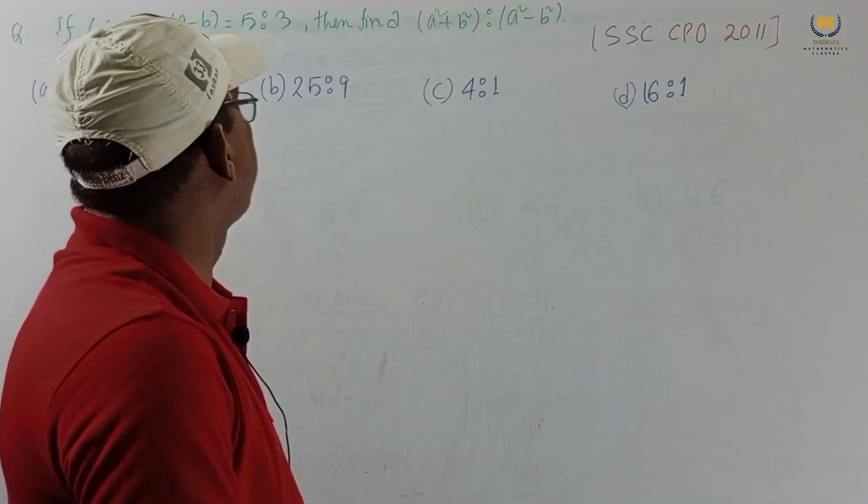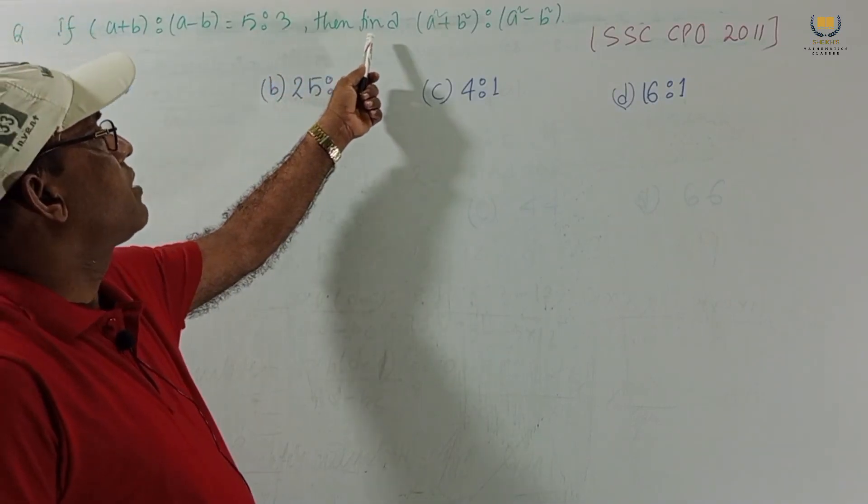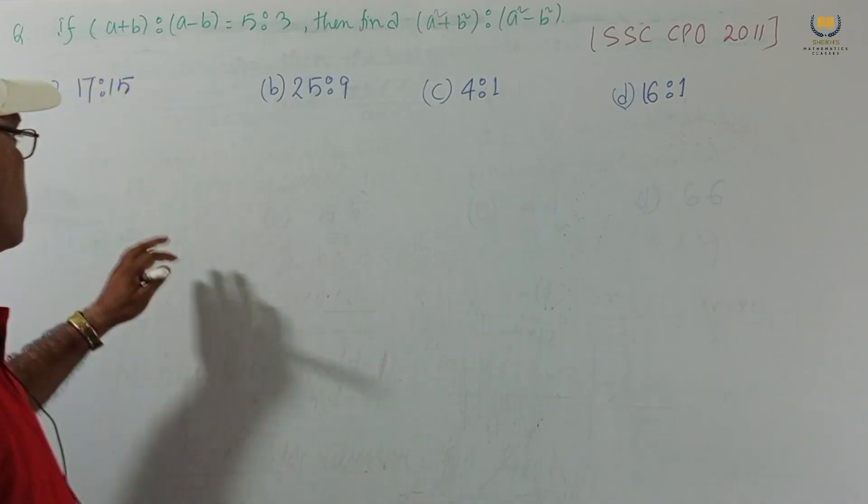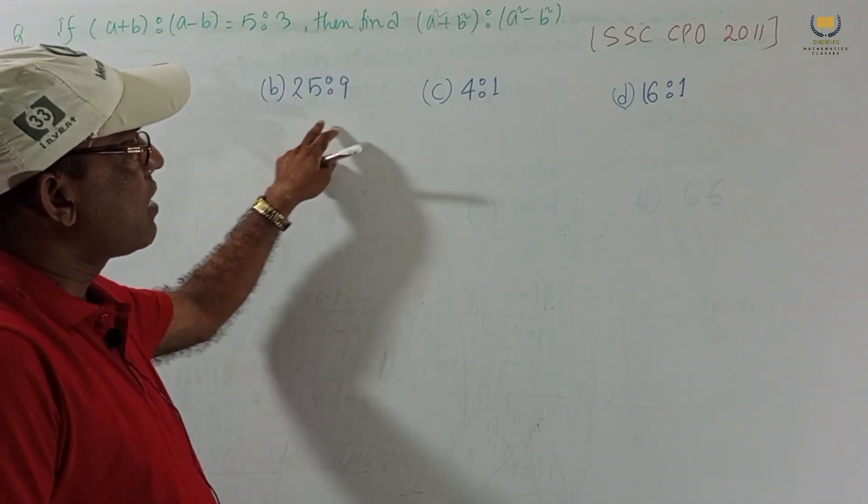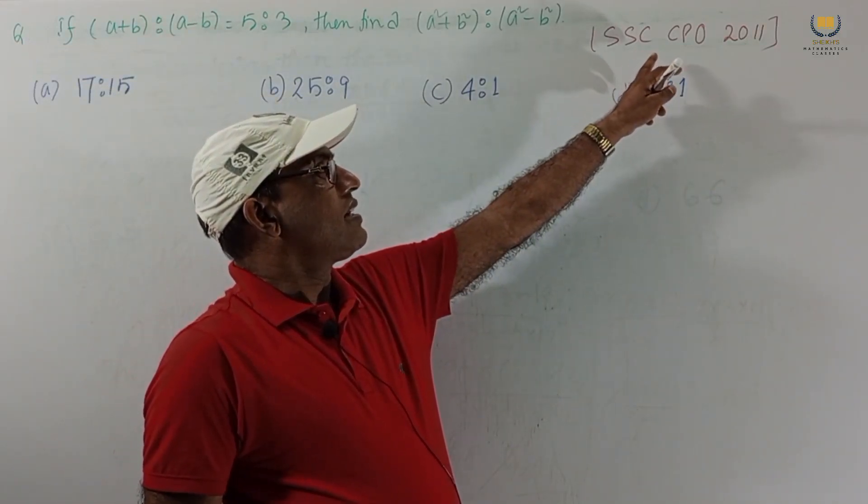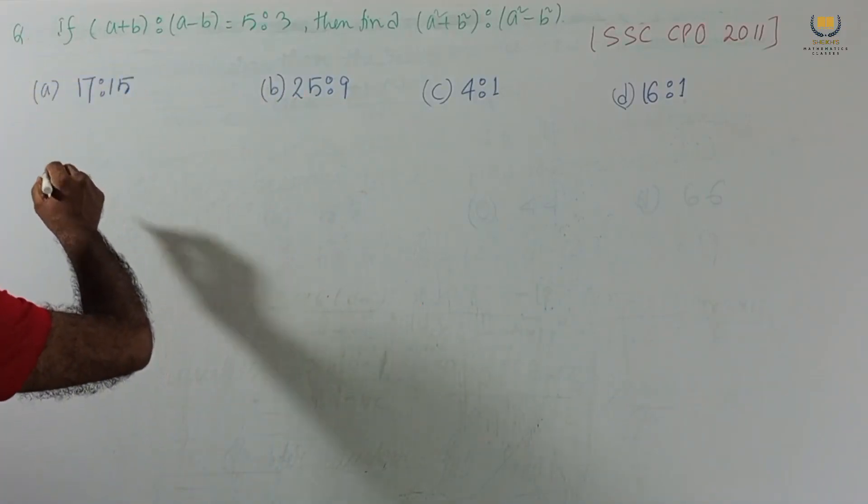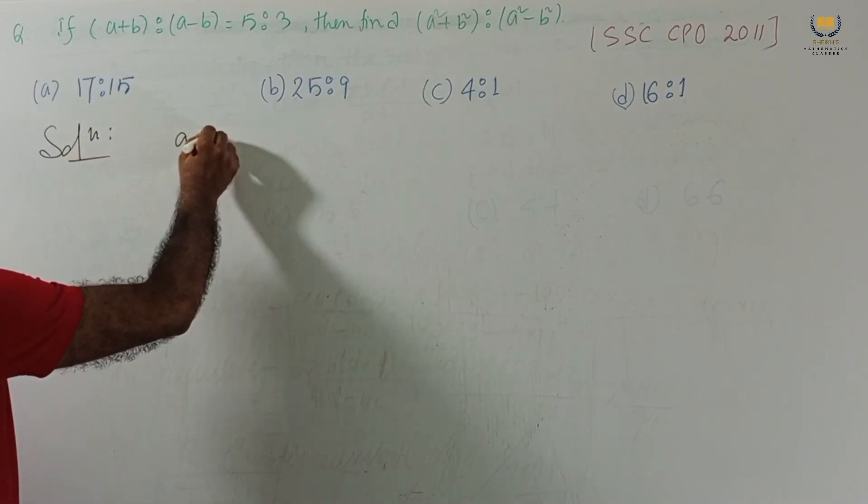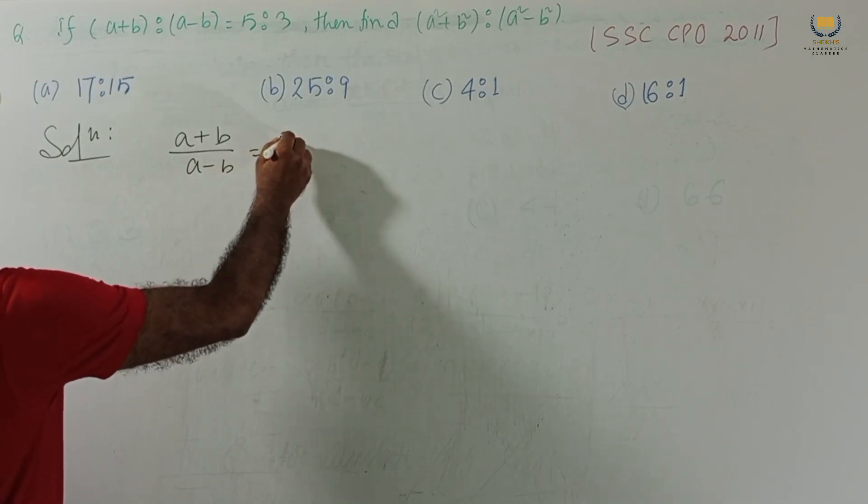Another problem. If (A+B) is to (A-B) equal to 5 is to 3 then find (A² + B²) to (A² - B²). Option given 17:15, 25:9, 4:1, 16:1. It was set in SSC CPO 2011. Given (A+B)/(A-B) equal to 5/3. So 3A plus 3B equal to 5A minus 5B.